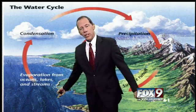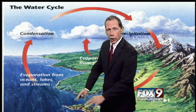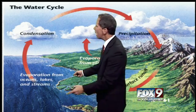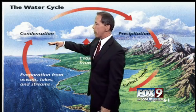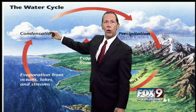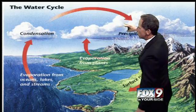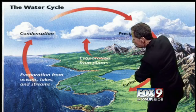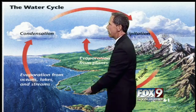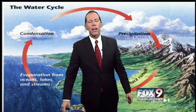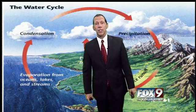Evaporation — the sun warming all the moisture and causing it to evaporate — makes the water disappear. It goes up, causing condensation, making clouds and eventually precipitation. That cycle continues as runoff goes into the streams, lakes, and rivers, and the process continues. It's a very important process indeed.